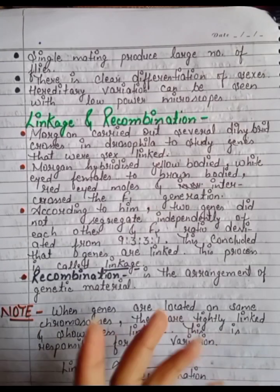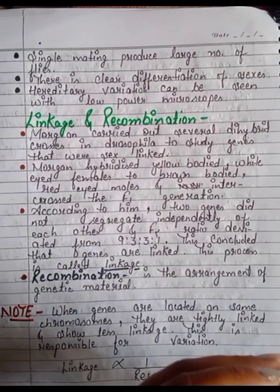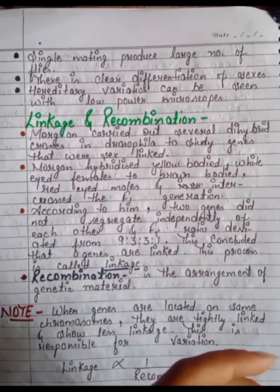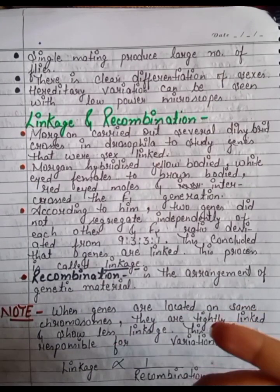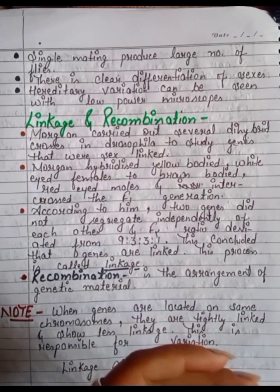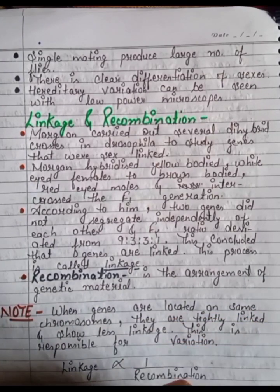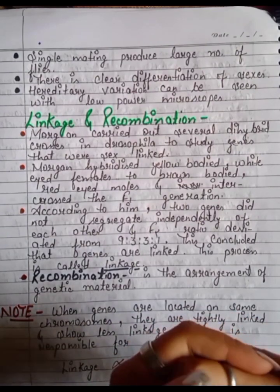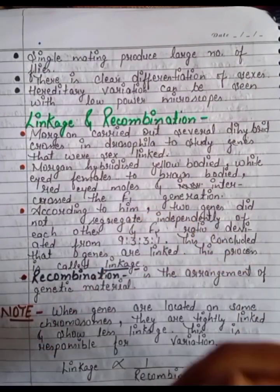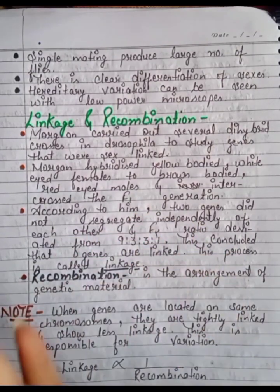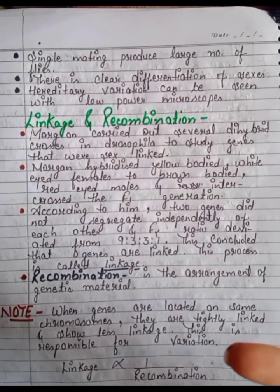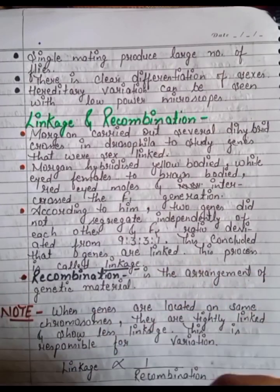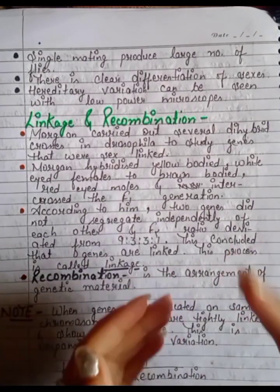Hello friends, we are doing Chapter: Principles of Inheritance and Variation, Part 3. In the last video we studied incomplete dominance, co-dominance, difference between gene and chromosome, and chromosomal theory of inheritance. Today we will study linkage and recombination.